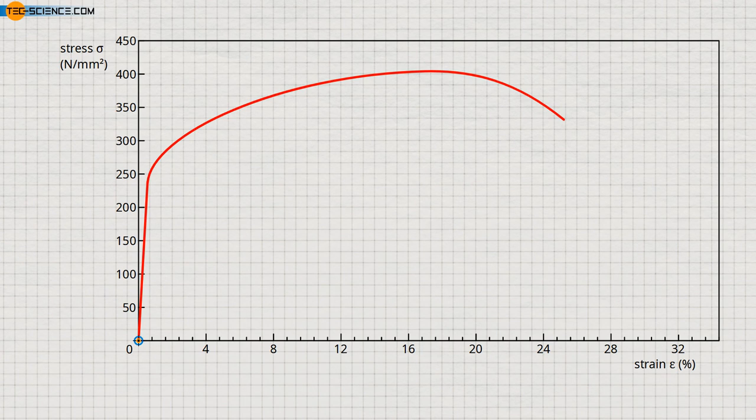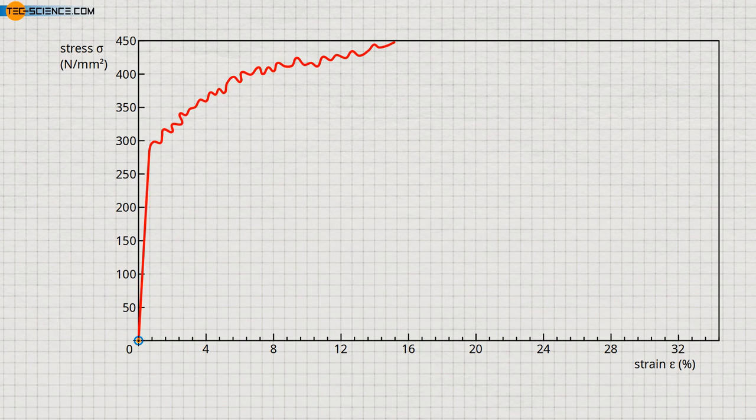A special case arises when the diffusion rate is approximately equal to the speed of the dislocation. Then the dislocations must break away from the Cottrell clusters, but are recaptured by the post-diffusing foreign atoms before they must break away again.